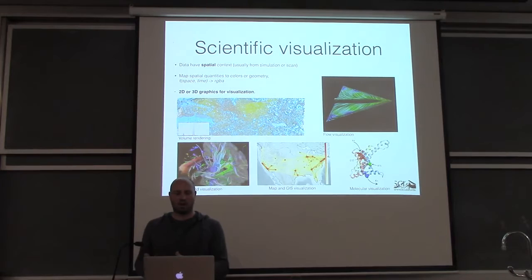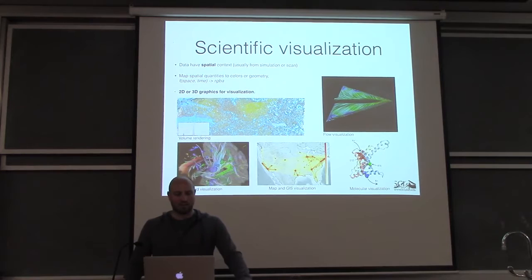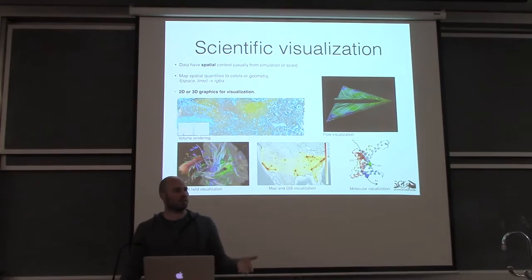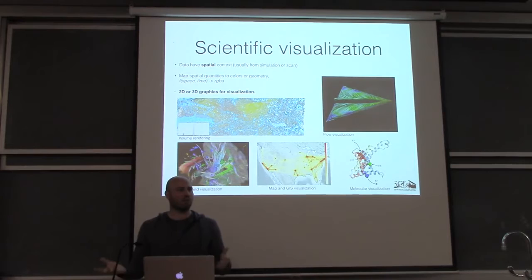Scientific visualization, what I'll talk about today, is predominantly an offshoot of computer graphics. The idea is that you're looking at scientific data that have some spatial context — usually coming from simulation sources or from scan sources like a CT or MRI. You're really interested in how you map these spatial quantities to actual colors or in some cases geometry.